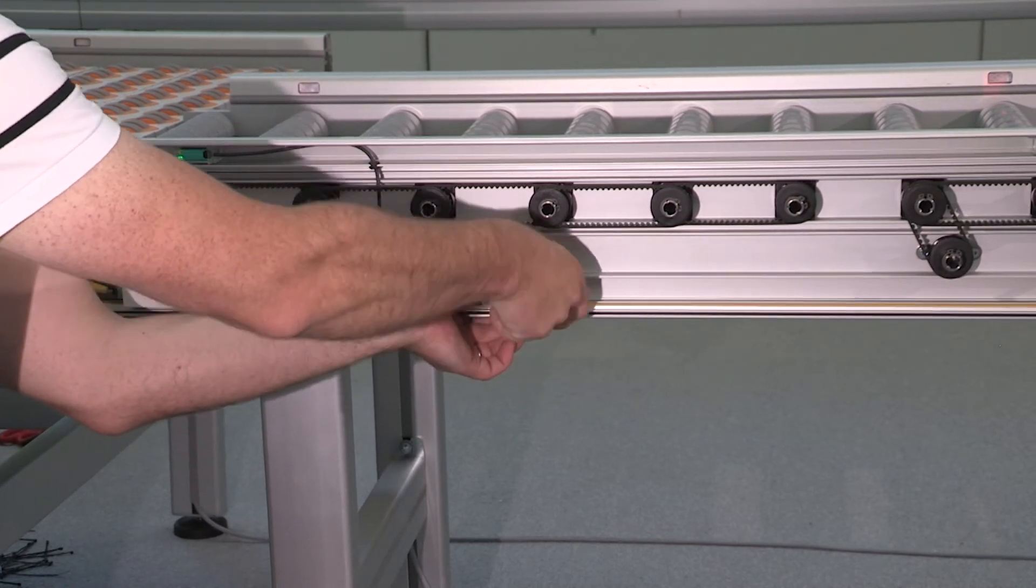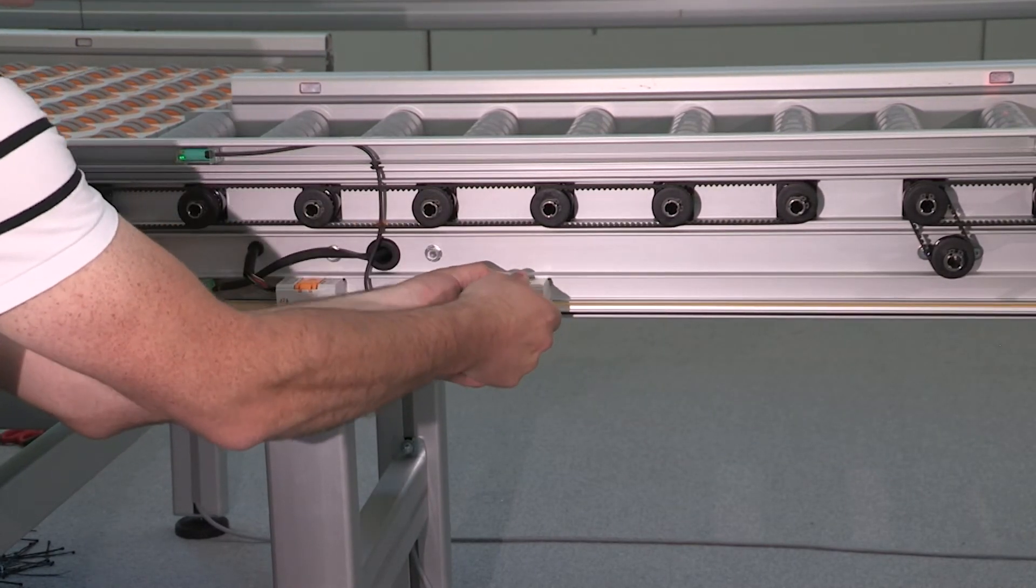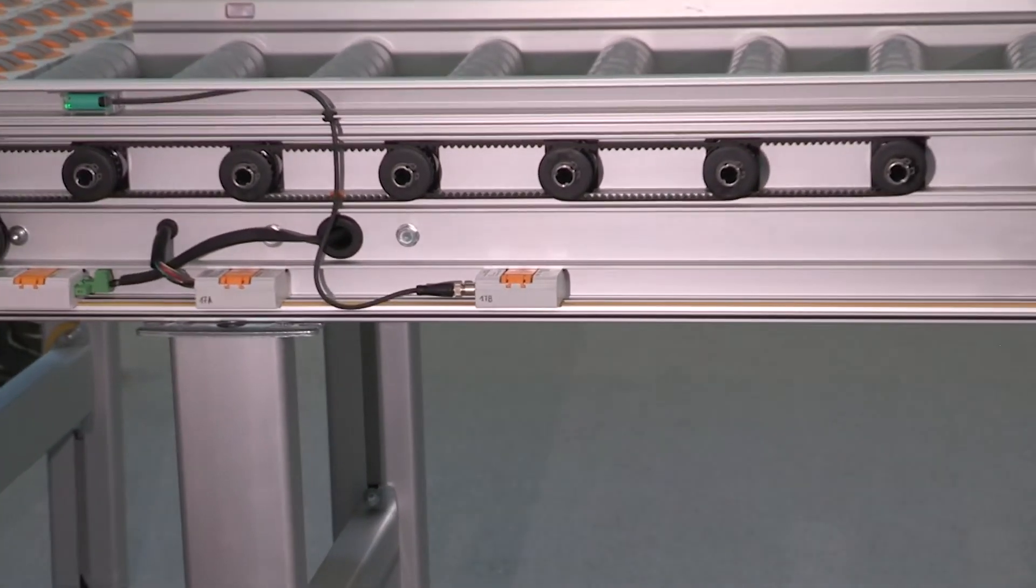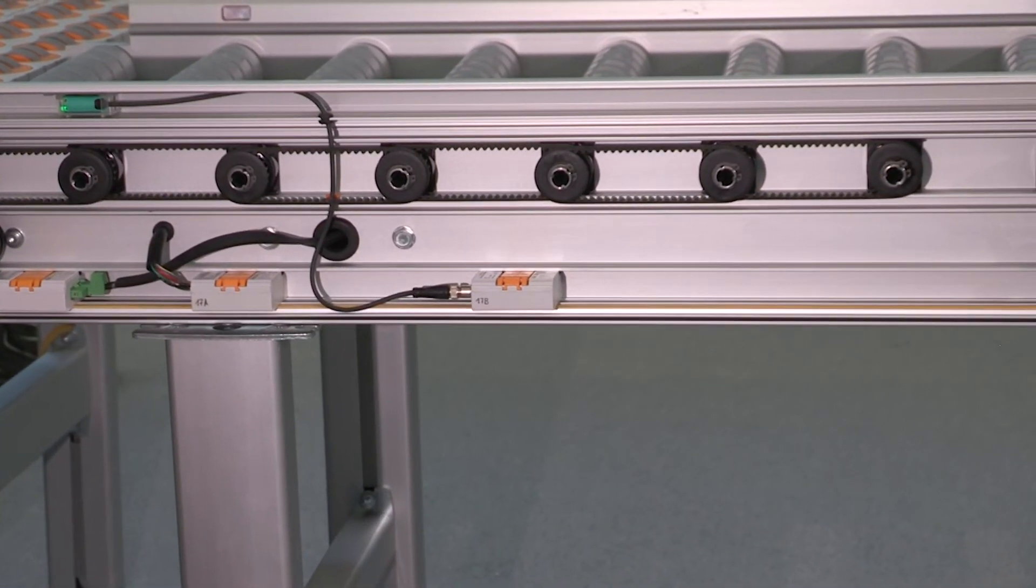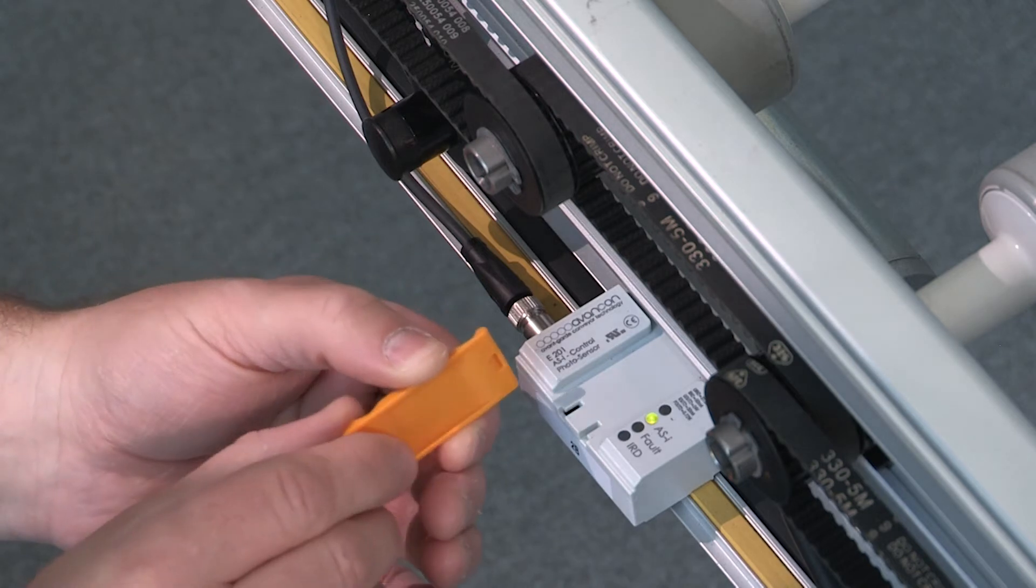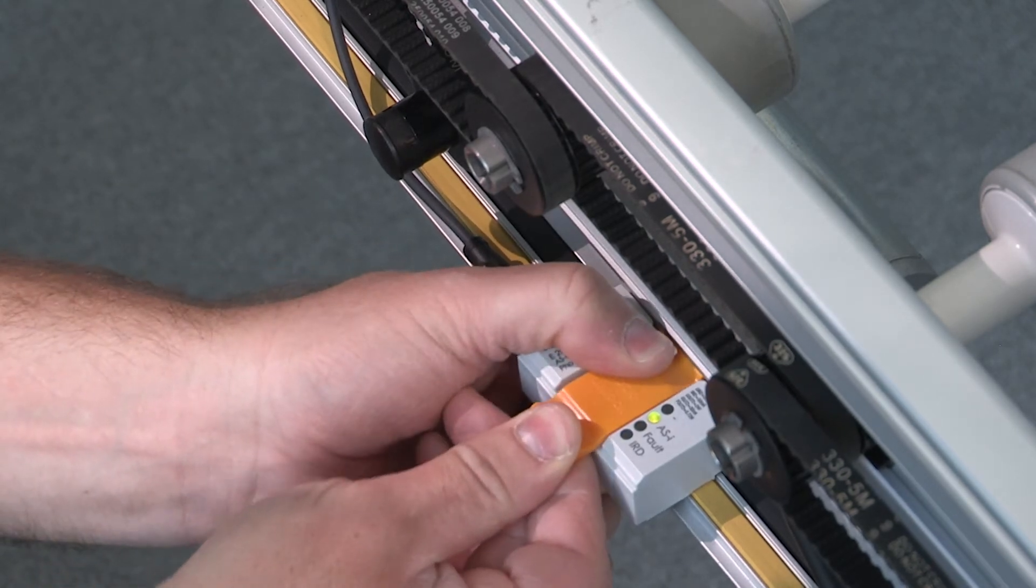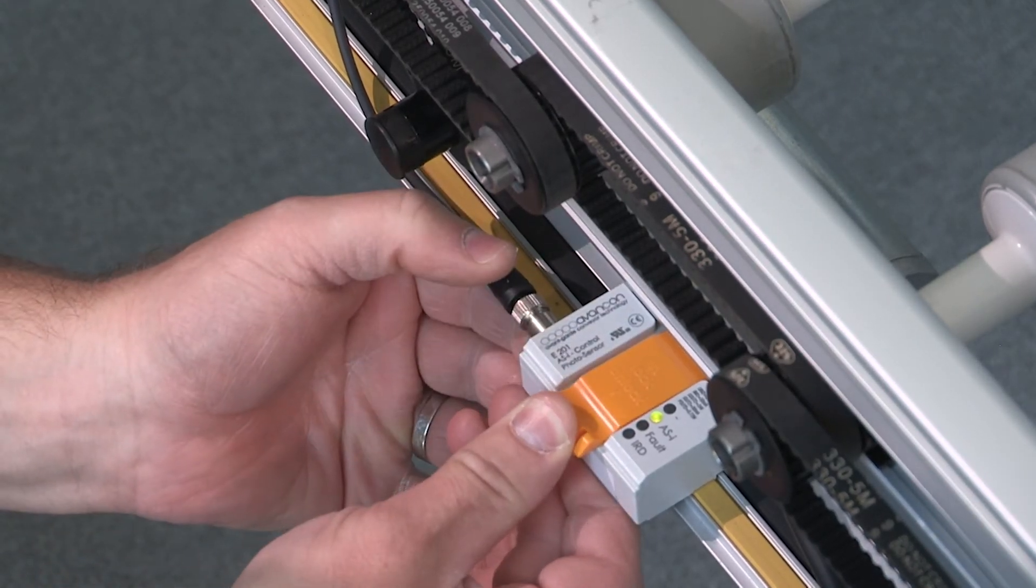Now install a new box with the same code. Attach the connector and press the box onto the yellow and black cables. Secure it with the orange slider as you see here.